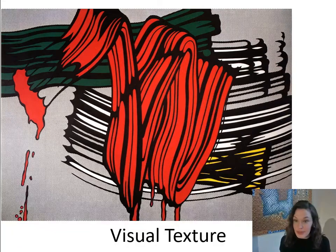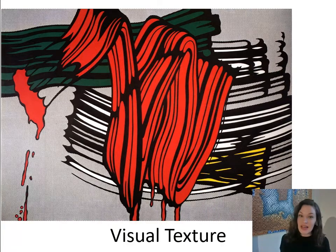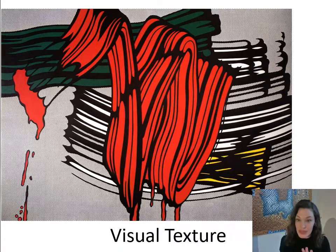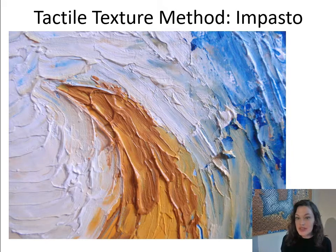Knowing that, artists are able to create visual texture — texture that doesn't actually exist in their artwork. Here we see a screen print by Roy Lichtenstein where he creates images with lights and shadows to create the sense of the texture of paint on the surface, whereas the actual texture of the printed picture plane would be very different from the way it looks. First let's talk about tactile texture, then we'll get back into visual texture and how artists create it.